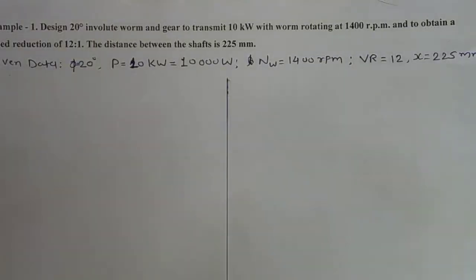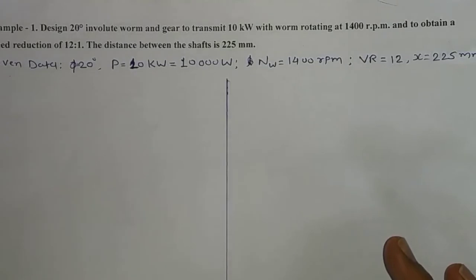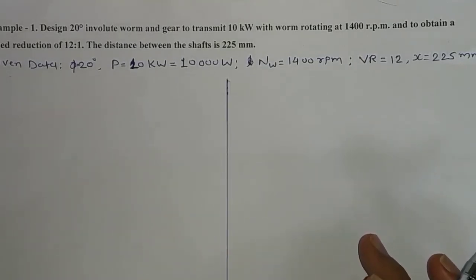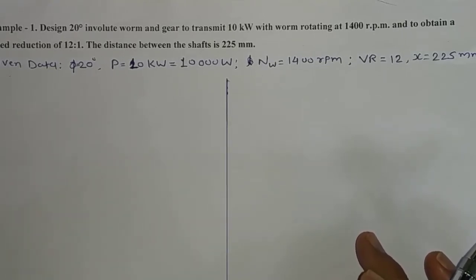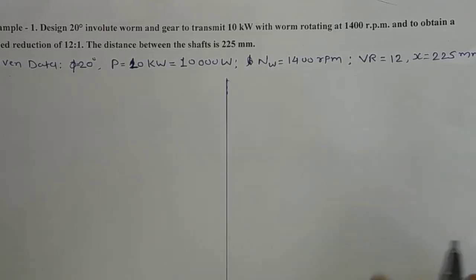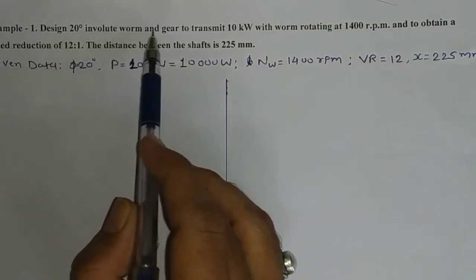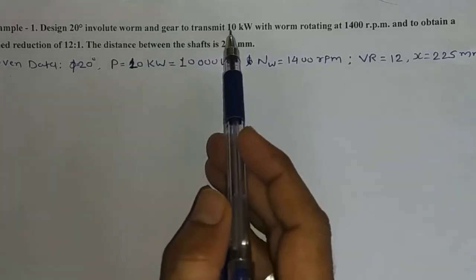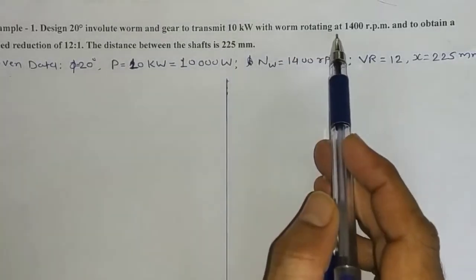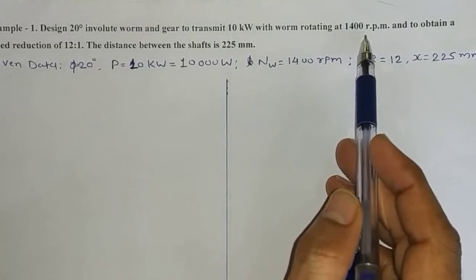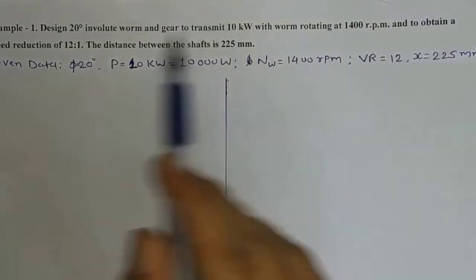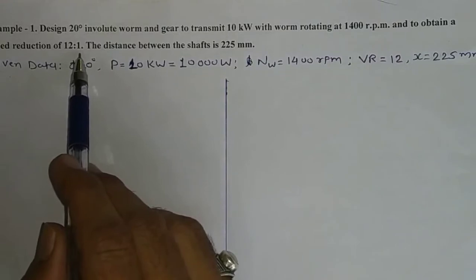Namaskar my dear friends. Welcome to the lecture series of machine design. In this lecture, let us understand the design procedure of worm gear by solving an example. We start with example number one: design a 20-degree involute worm and gear to transmit 10 kilowatt with the worm rotating at 1400 RPM and to obtain a speed reduction of 12.